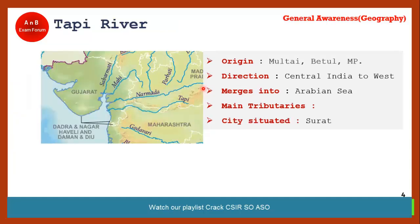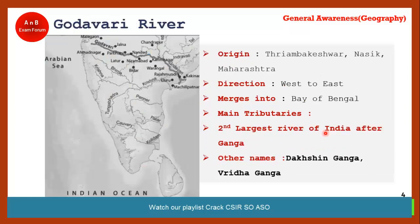The next important river is Tapi. Similar to Narmada, it flows from central India to the west. Its origin is Betul in Madhya Pradesh, and it finally merges into the Arabian Sea. The city of Surat is situated near the Tapi river — this question appeared in the DRDO September 9 exam.